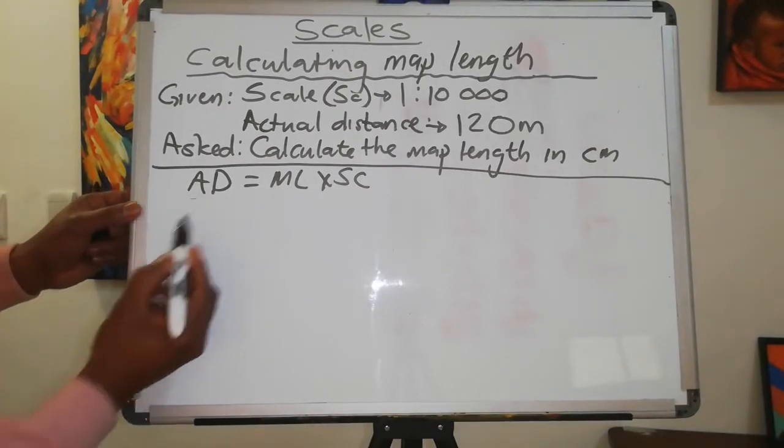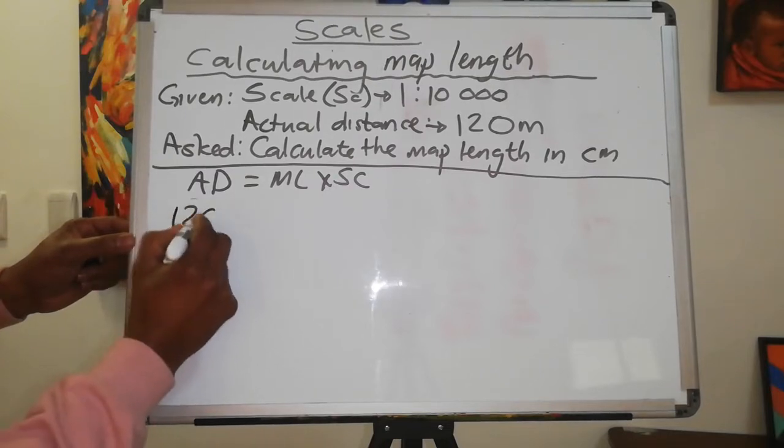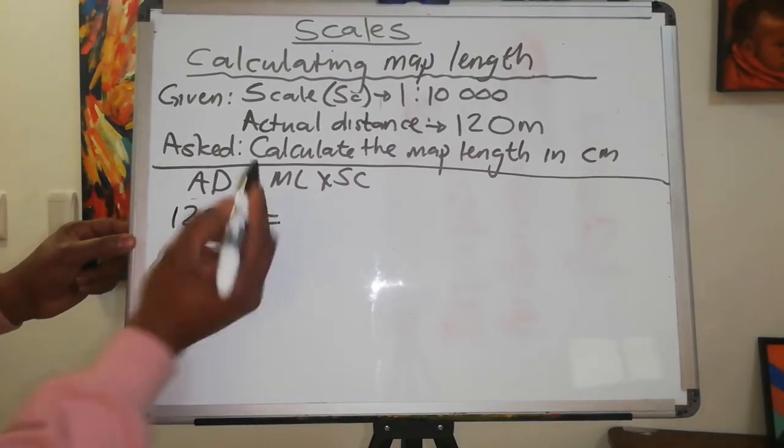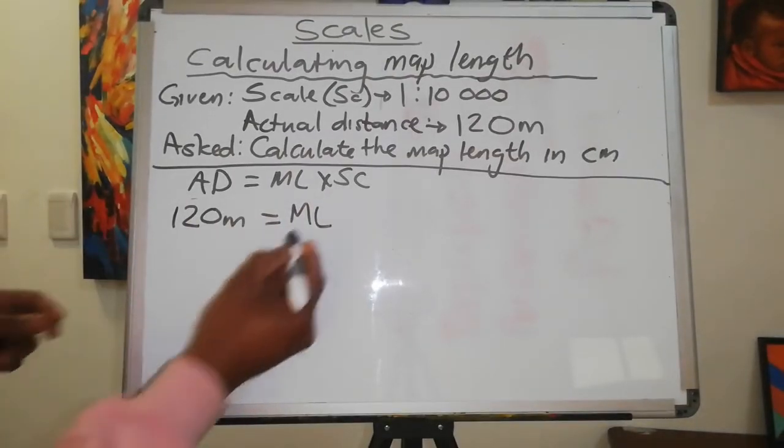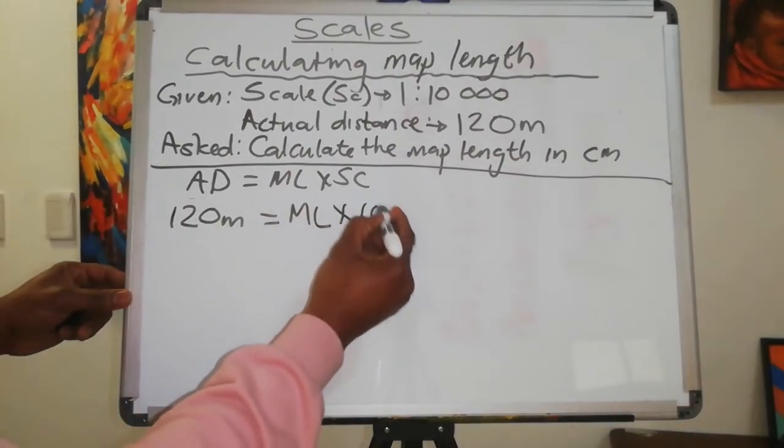Actual distance, so we say 120 meters, is equal to map length—that's the one that they are asking us—times the 10,000.